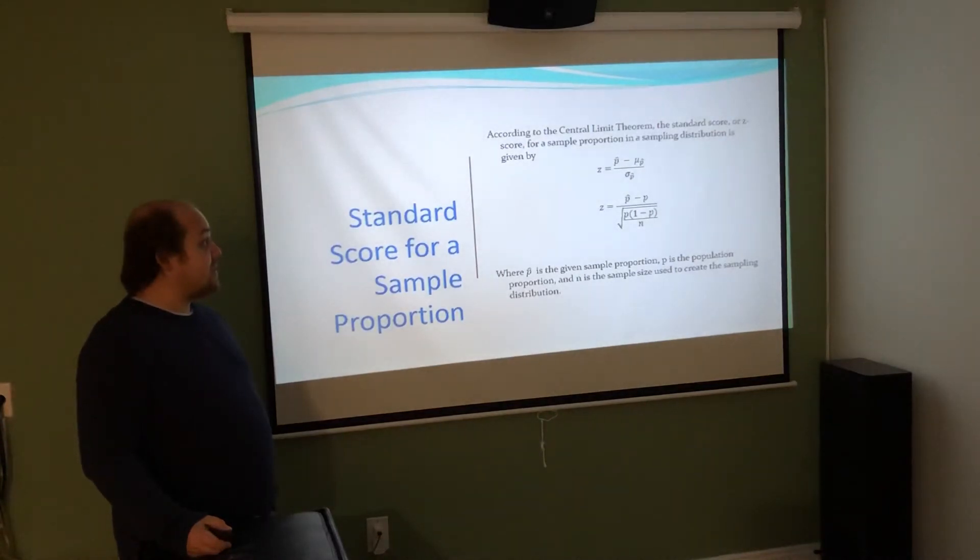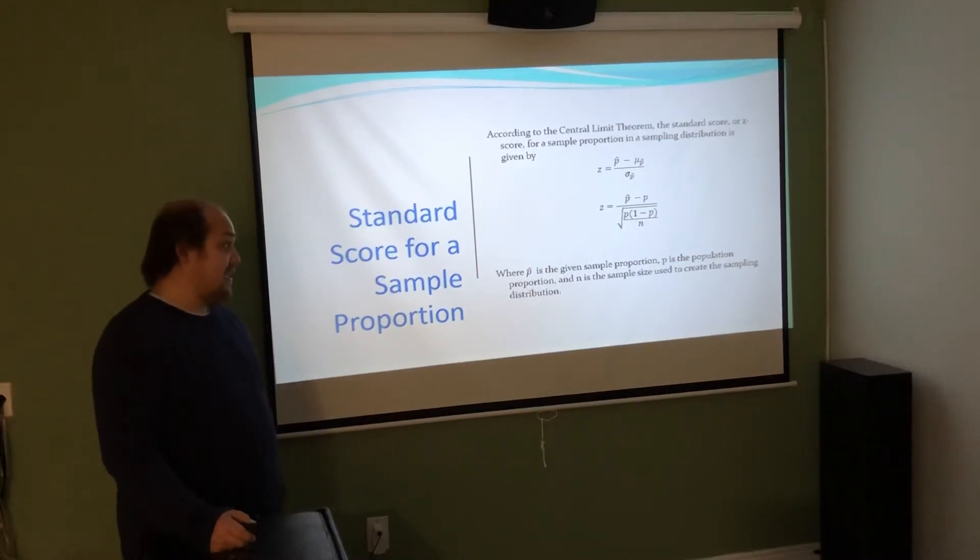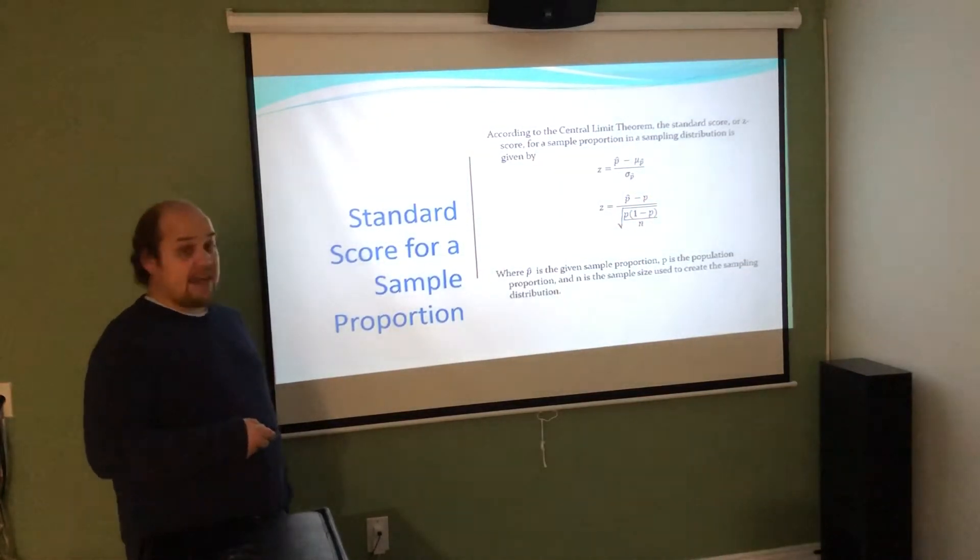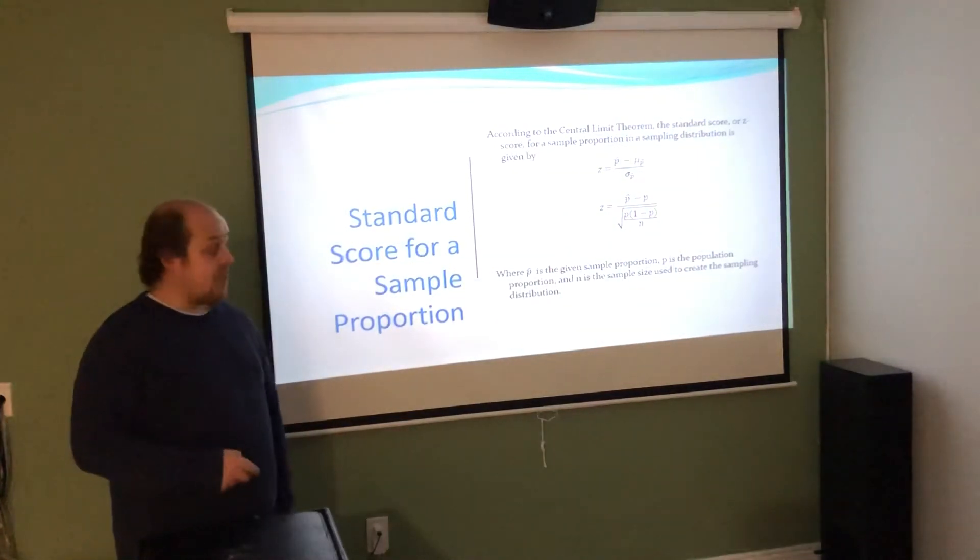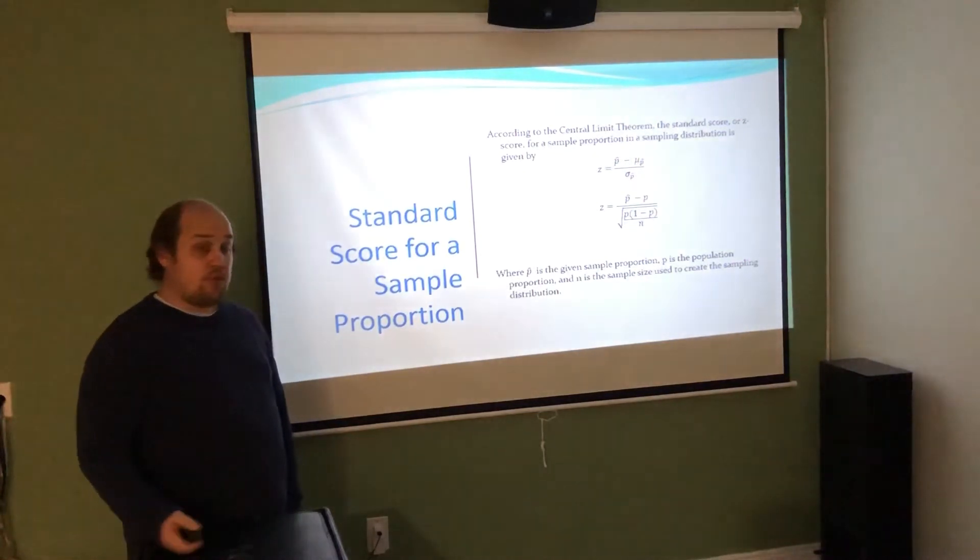According to the central limit theorem, the standard score or z-score for a sample proportion is given by p hat minus mu sub p hat over sigma sub p hat. In practice, whatever the p from our sample is, minus the given population p, over the root of the population p times 1 minus the population p over N. The key distinction here is where there's a population p versus a sample p. A lot of students end up putting p hat in the bottom as well - it should not go there. In the bottom, we should have the p that we were given as the known proportion of the population.